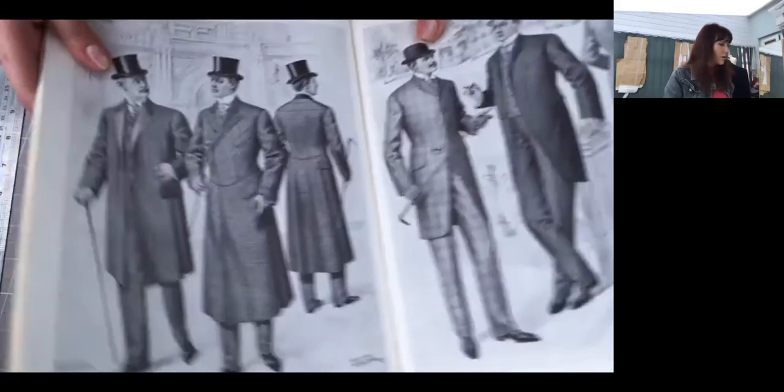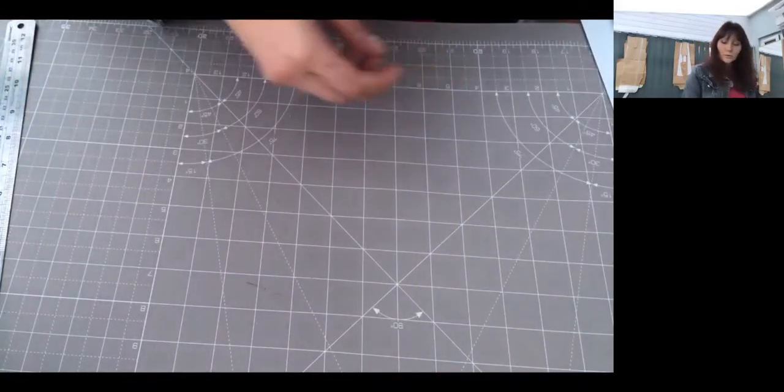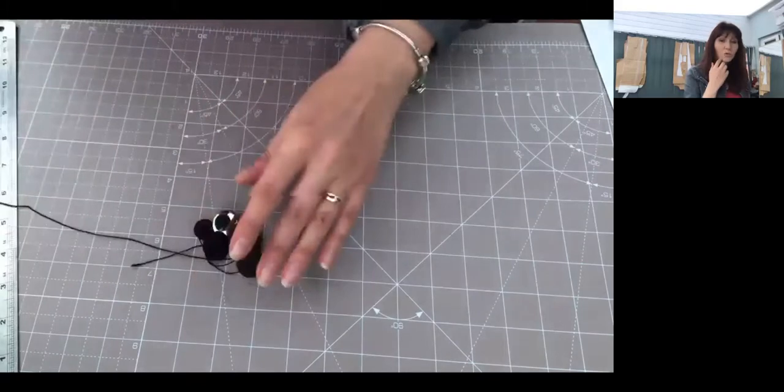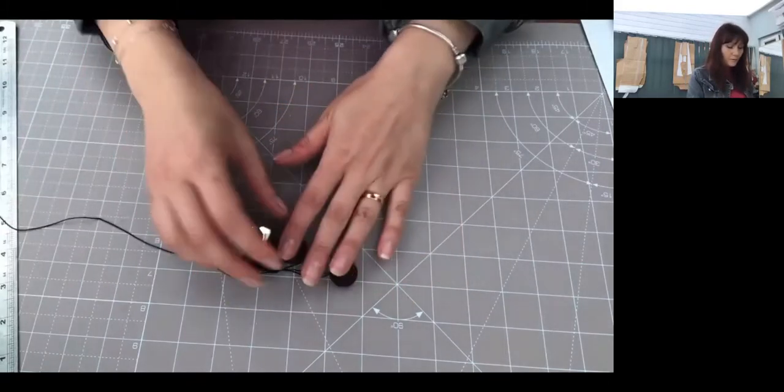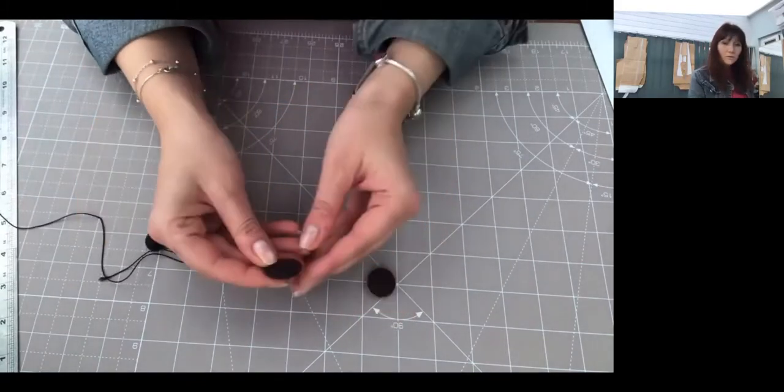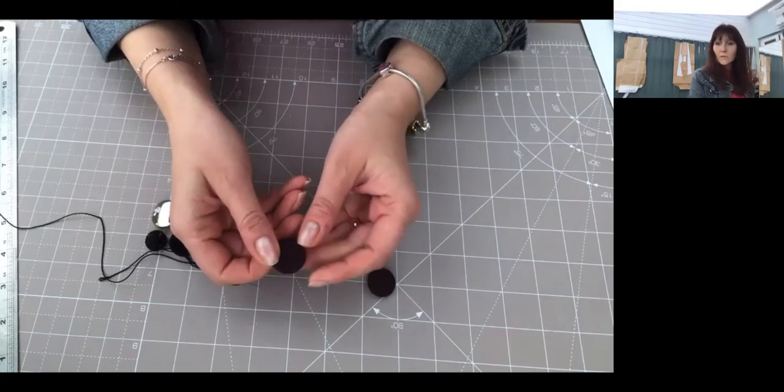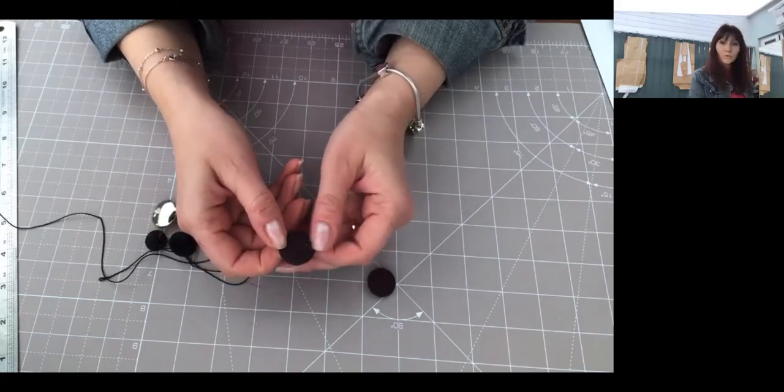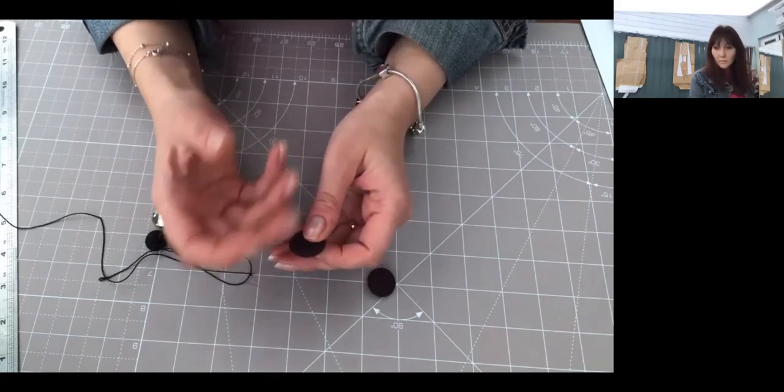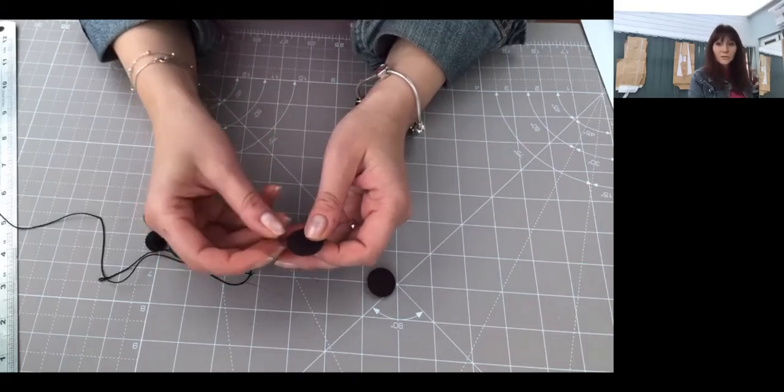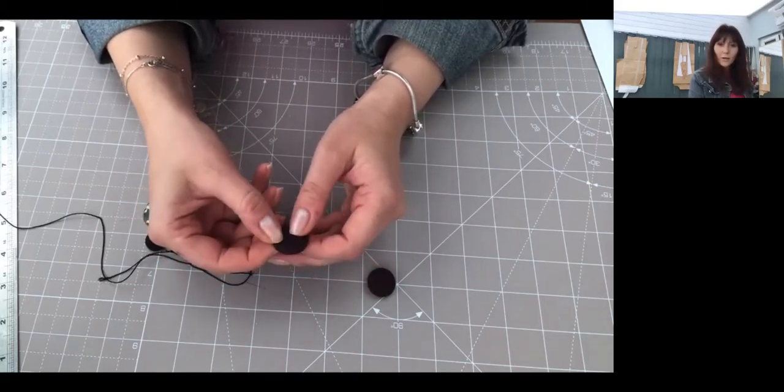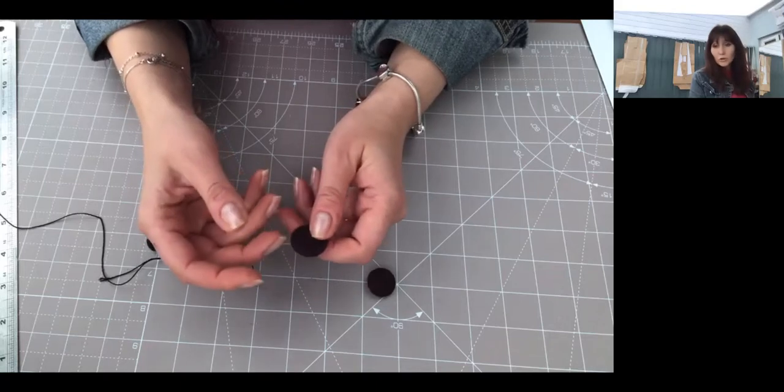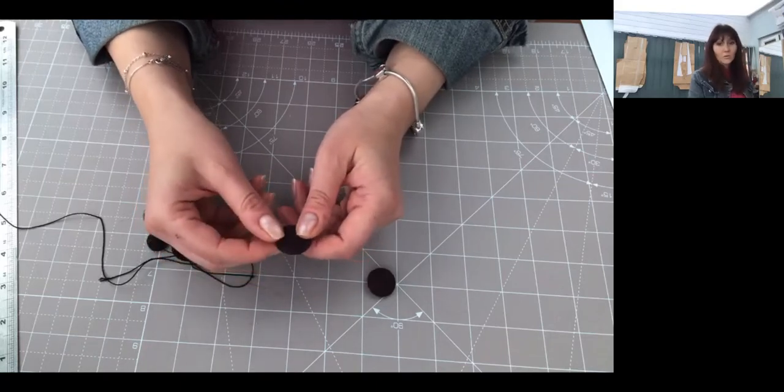What I usually do is I use two types of buttons. One is covered in wool which is the same fabric as you made the coat, or sometimes it can be decorative like velvet or satin, absolutely fine. Again, do your research. That's all about the research.